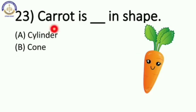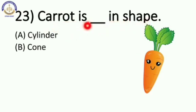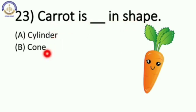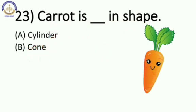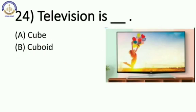Now next: carrot is blank in shape — cylinder or cone? Tell me. This is a cone shape. Very good. So our answer is B, option number B, cone.